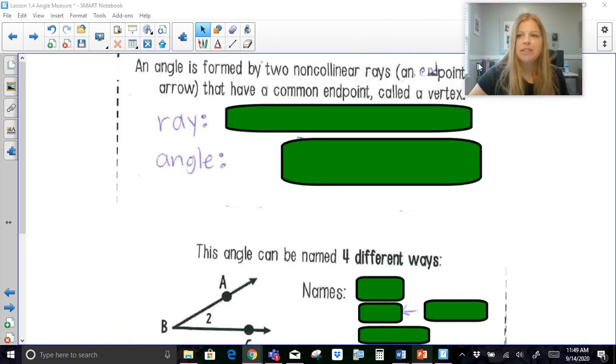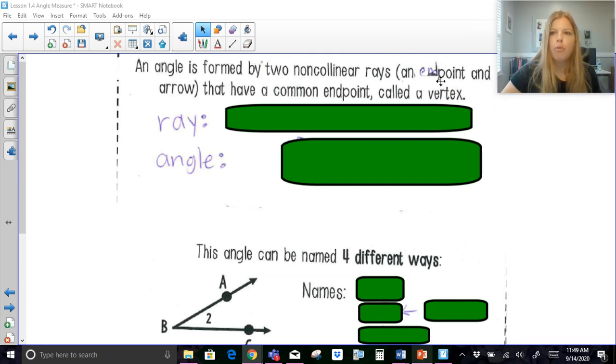So the first thing we need to know is we need to know what an angle is. An angle is formed by two non-collinear rays. So we previously learned that collinear means on the same line. So two non-collinear rays means that we're talking about two rays that don't make a straight line. So if you have two rays that don't make a straight line, they may look like this, they could look like this.